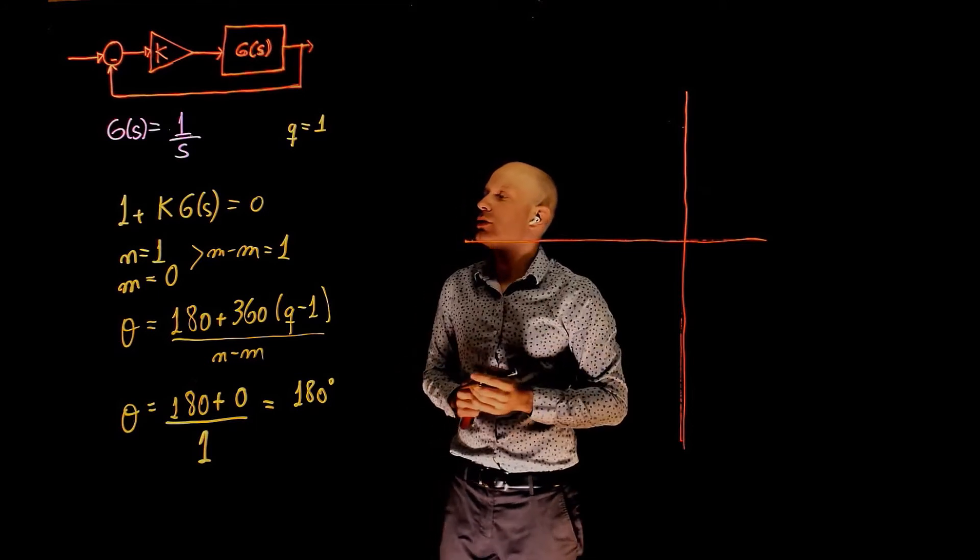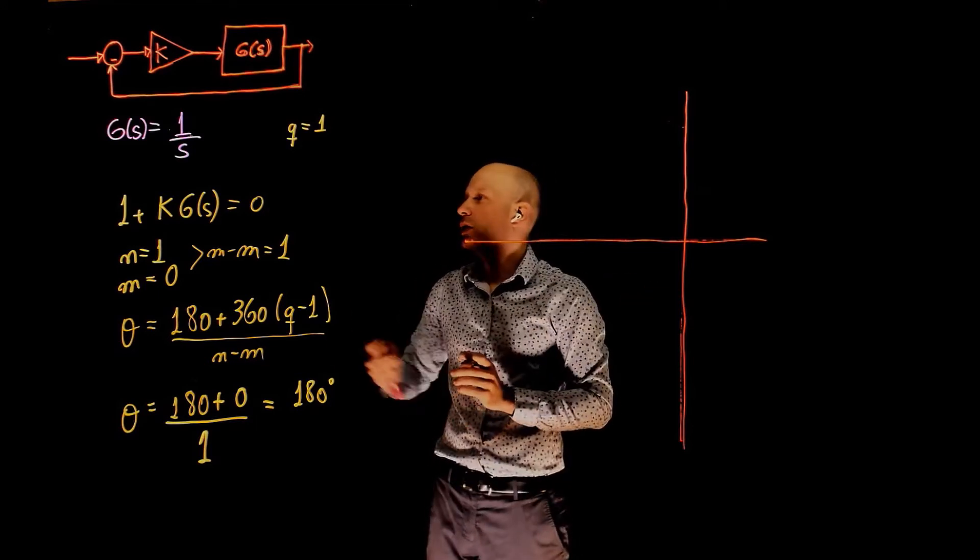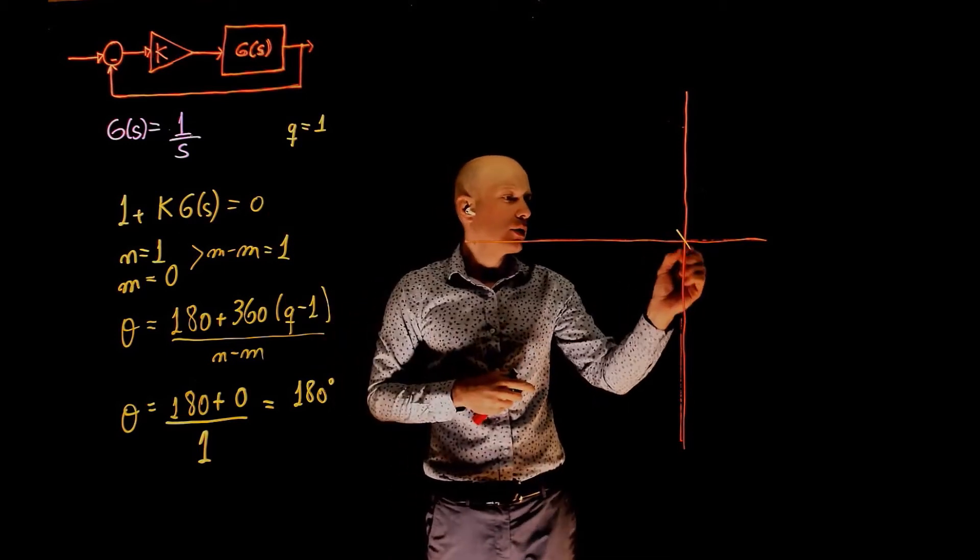Now let's locate the poles and zeros on the s-plane. We only have one pole. The pole is 0, it is located here.